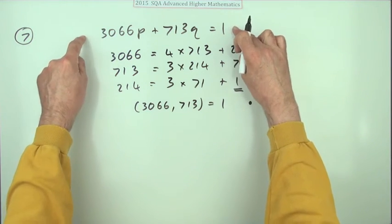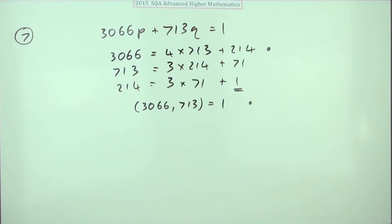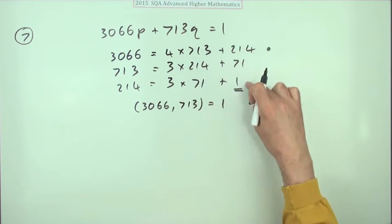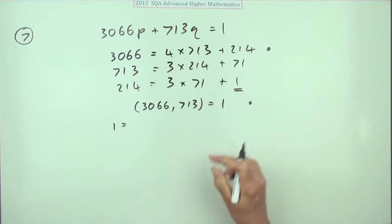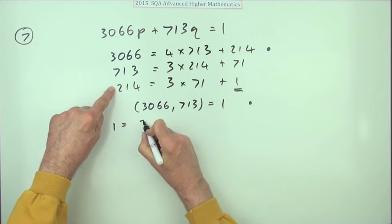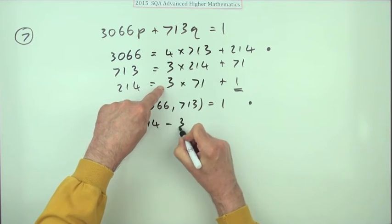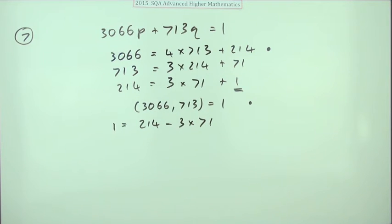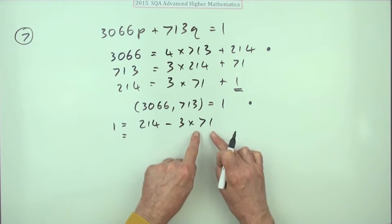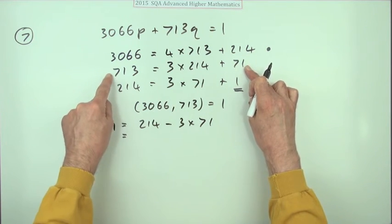So what is that 1 equal to? I'll do it backwards first of all. Well that 1 was equal to 214 take away 3 lots of 71. That's why I prefer to have these multiples at the front there rather than the other way around, which when you look at other texts is a much more common way to put it down. And then see now that 71 can be replaced by...